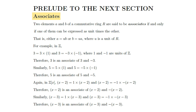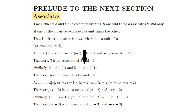For example, in the ring of all integers, the integer 3 can be expressed as a product of a unit times 3 and a unit times negative 3. Therefore, 3 is an associate of 3 and negative 3. Similarly, the integer 5 can be expressed as a product of a unit times 5 and a unit times negative 5, and so 5 is an associate of 5 and negative 5. In the ring of polynomials over integers, the polynomial x minus 2 can be expressed as a product of a unit times x minus 2 and a unit times negative x minus 2, and so x minus 2 is an associate of x minus 2 and negative x minus 2.